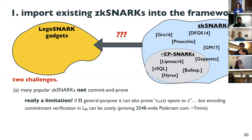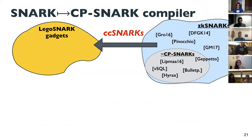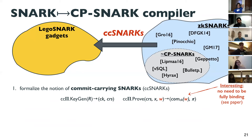The second challenge is that other existing schemes have different commitment schemes, so if they don't share the same commitment, how can they talk to each other? We solve this with an intermediate notion between ZK-SNARKs and commit-and-prove SNARKs that we call commit-carrying SNARKs.